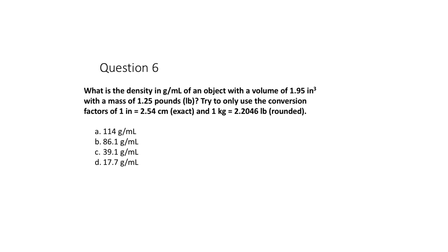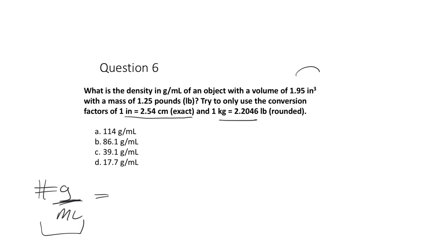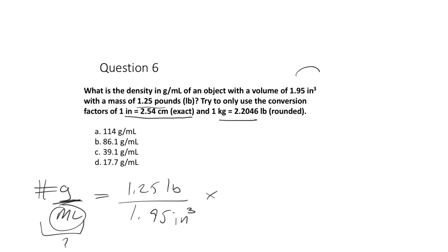Number six: what is the density in grams per milliliter of an object with a volume of 1.95 in³ and a mass of 1.25 pounds, using given conversion factors? Start with density as mass per unit volume. I'll begin with 1.25 pounds divided by 1.95 in³ and try to get to grams per milliliter. One key conversion: a cubic centimeter equals one milliliter — that's how meters relate to liters.